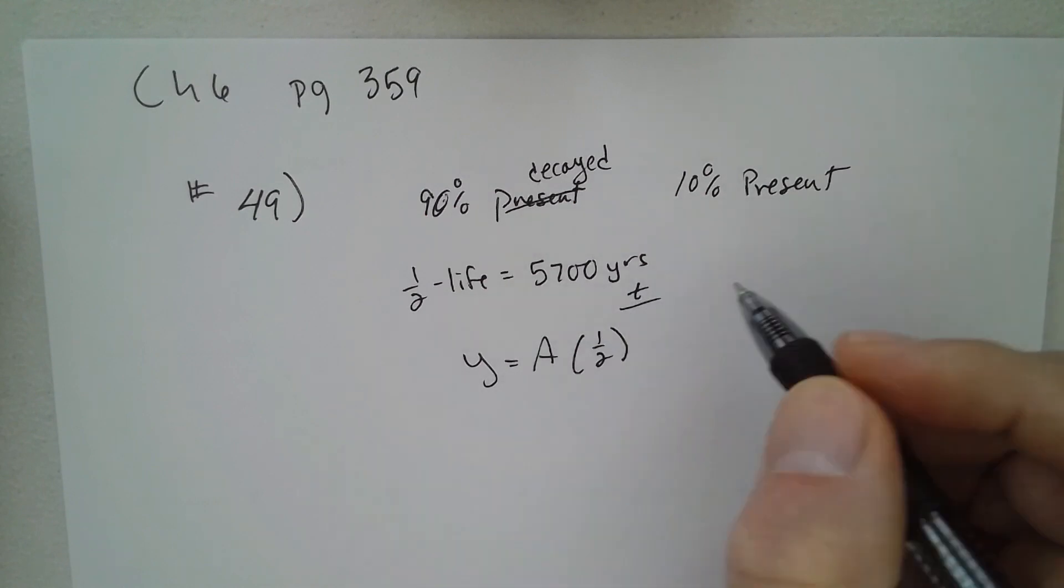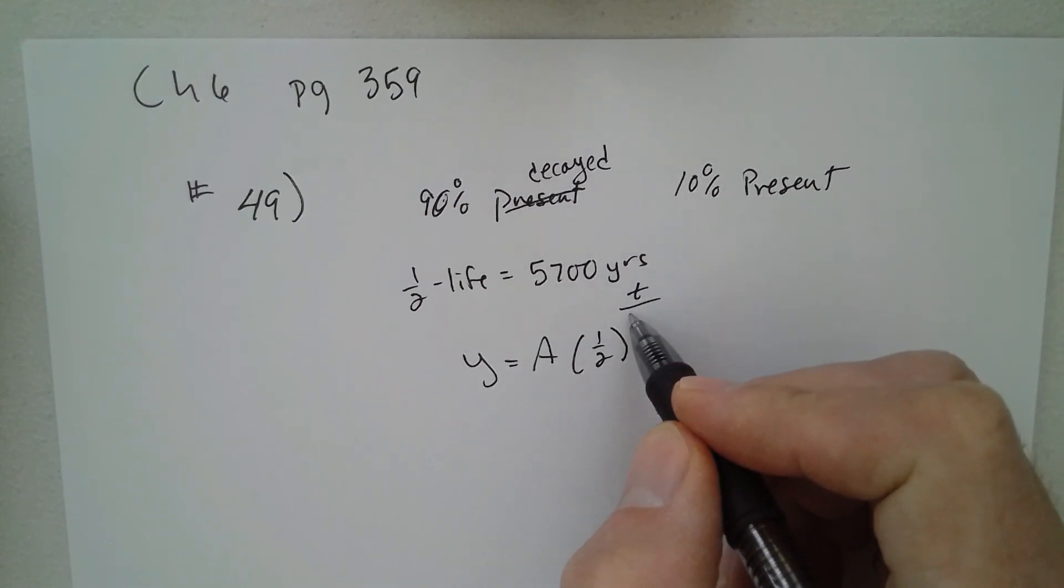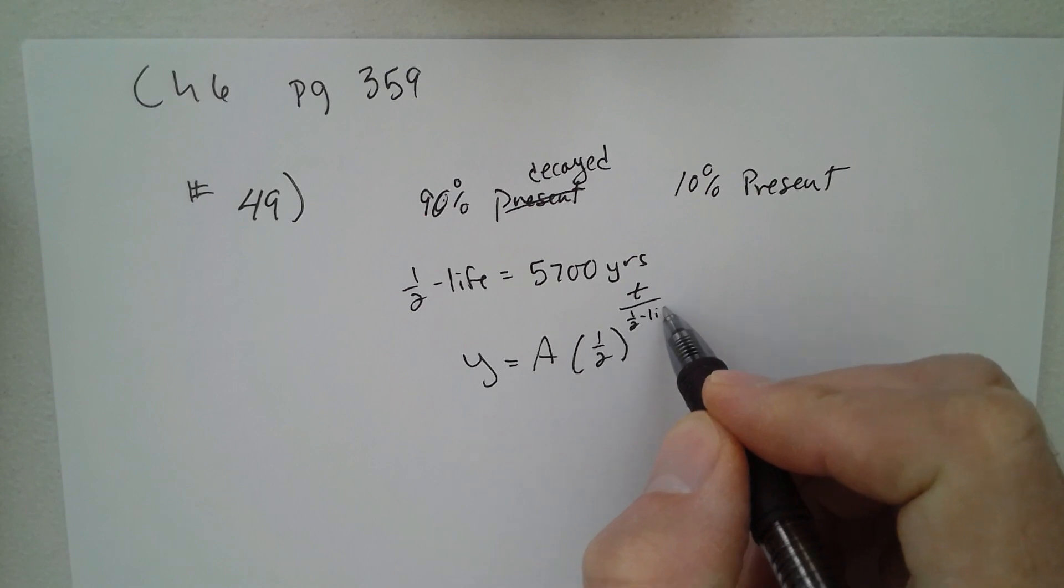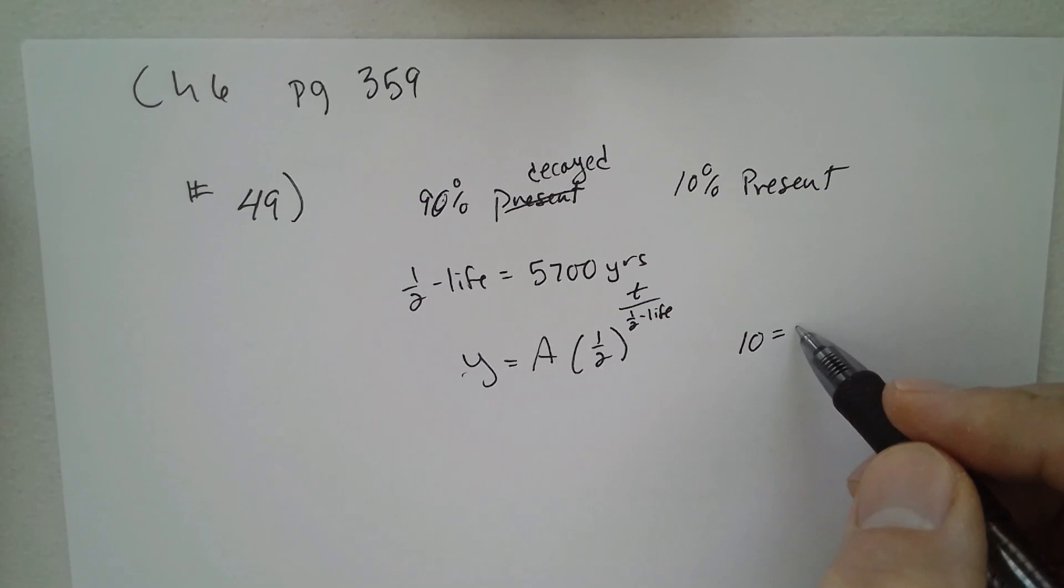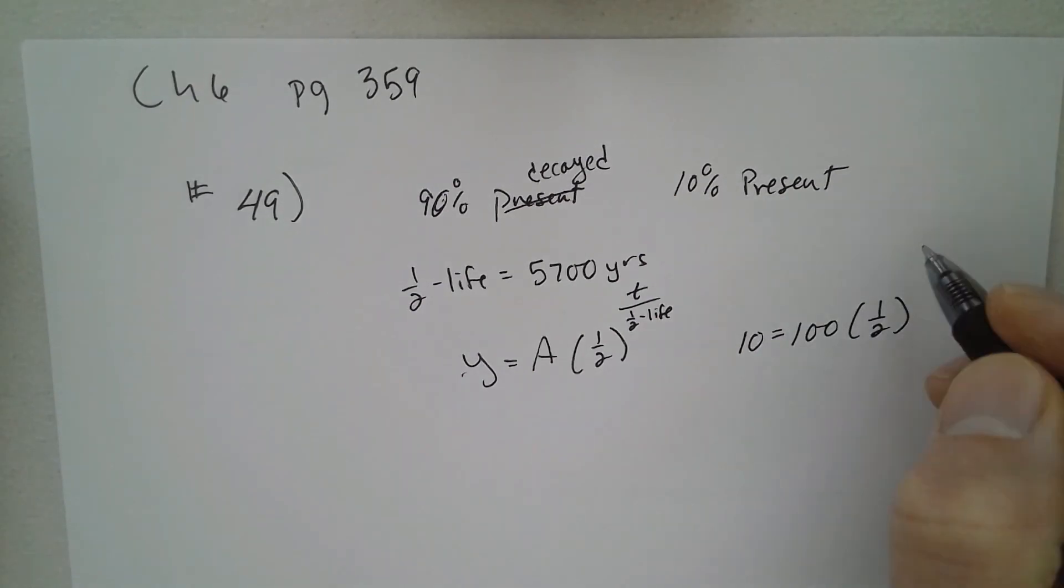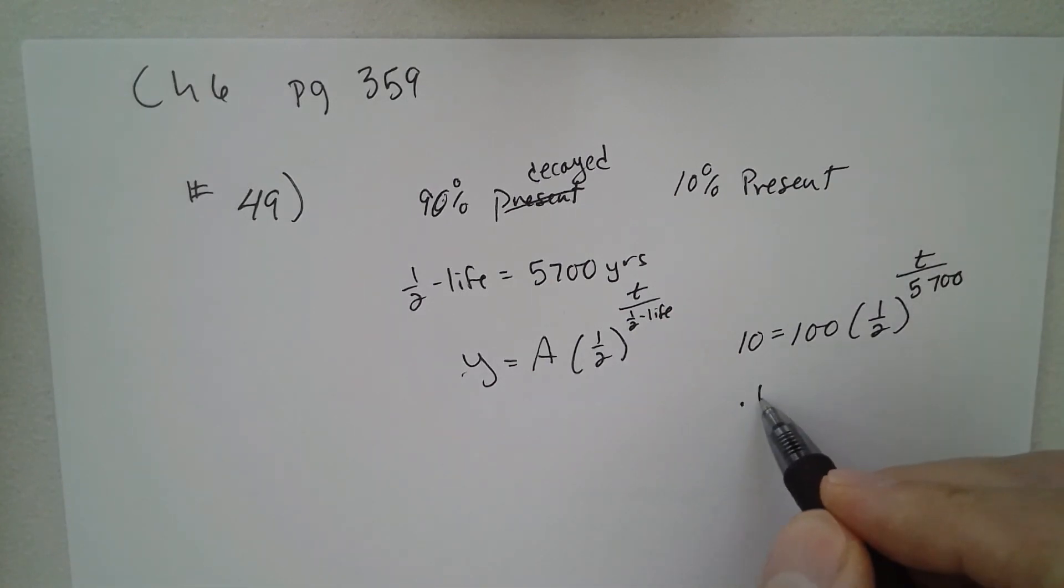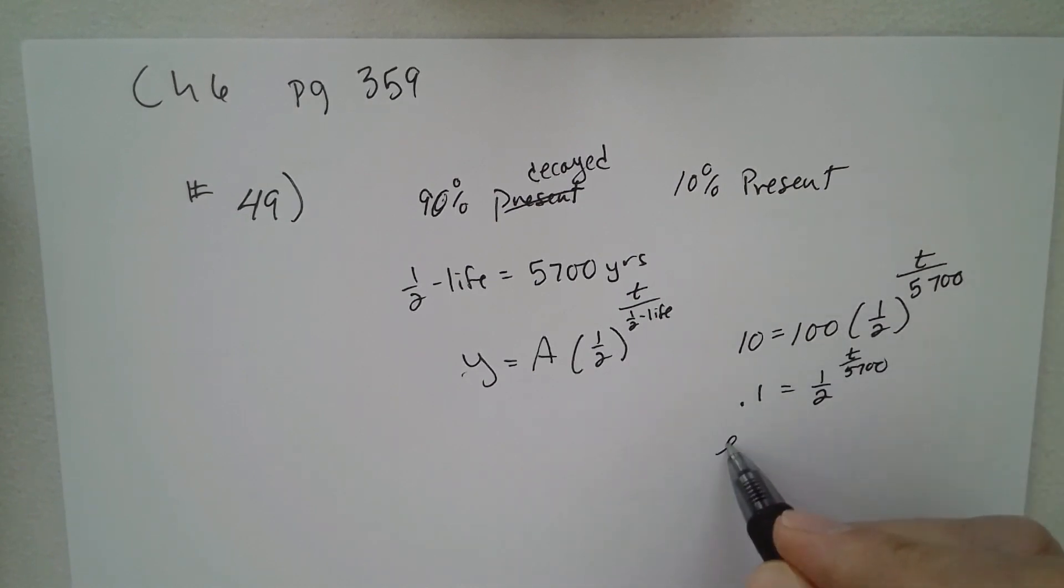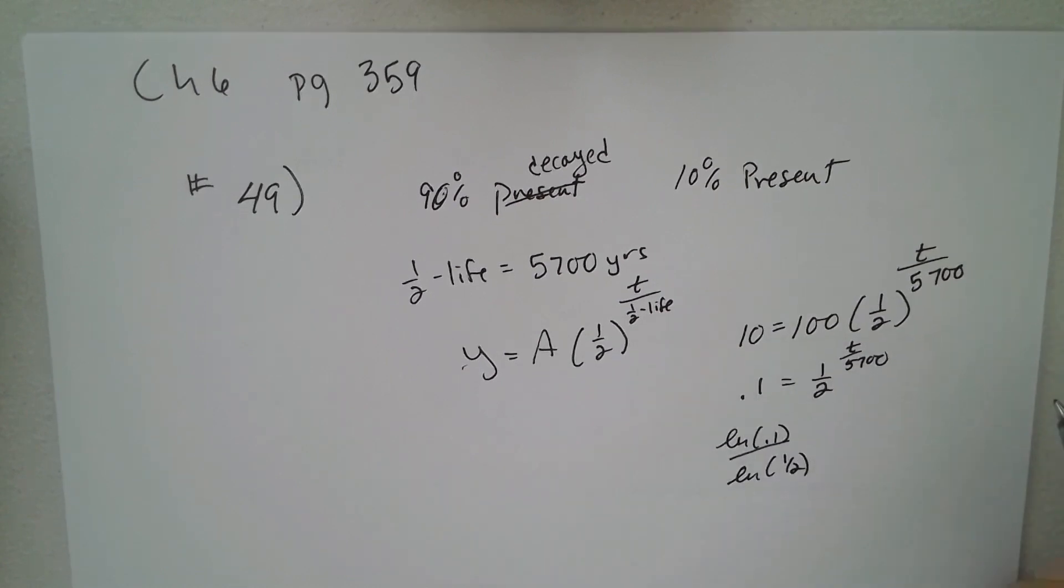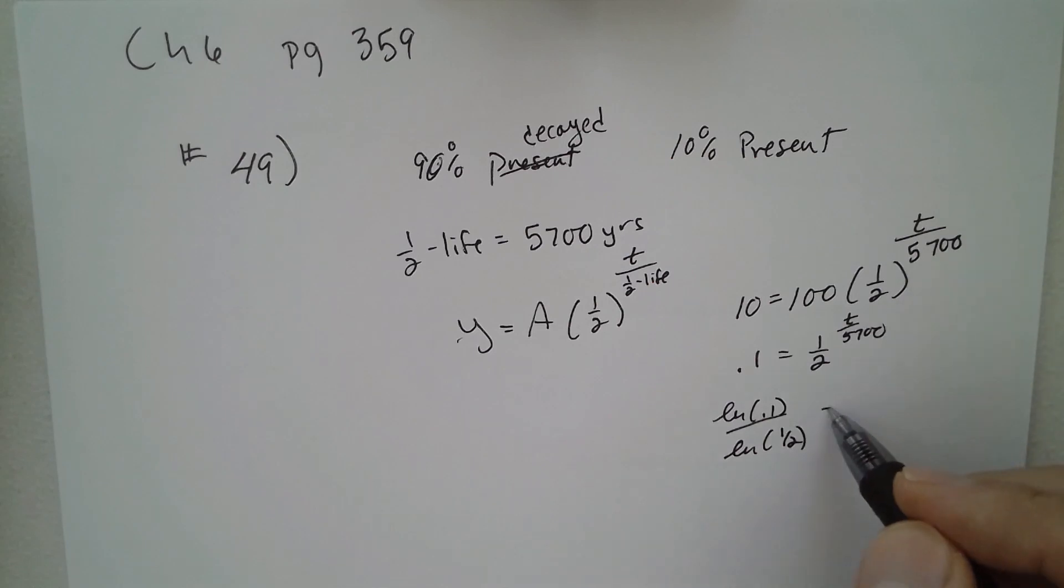So in this problem, we're gonna have 10% left. I'm gonna start with 100, one-half to the time, which is what we're looking for, and 5,700 is the half-life. So 0.1. We can do natural log of 0.1 divided by natural log of 0.5. That's gonna equal t over 5,700.